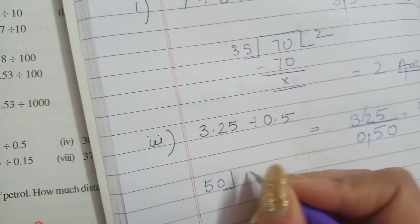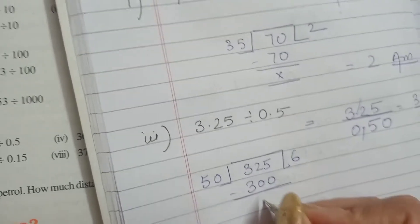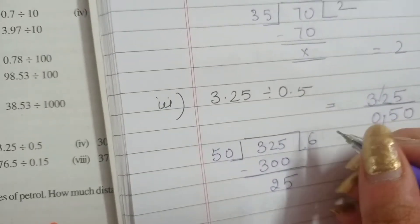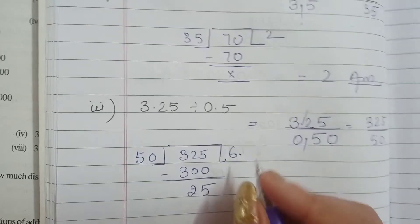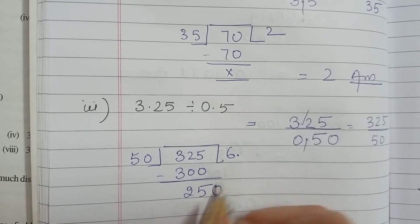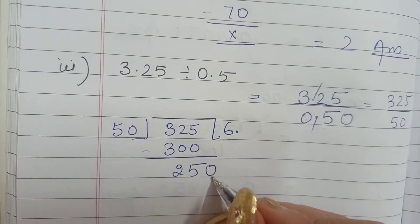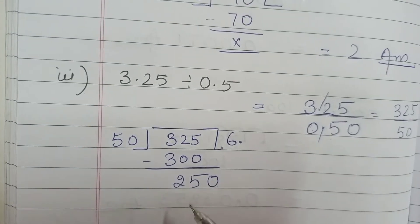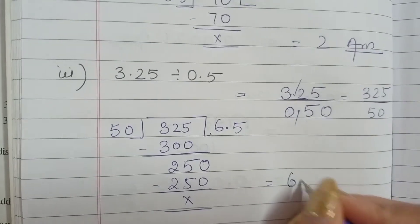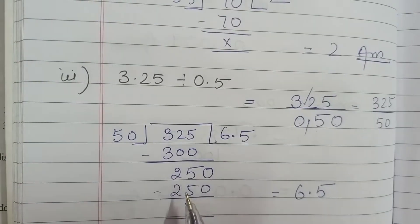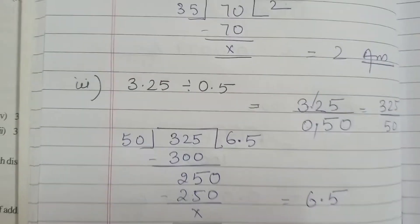Simply we will divide 325 by 50. 50 into 300 — the remainder is 25. We will not leave it like this. We add a decimal sign to the answer, and when we add the decimal sign we can write a 0 with the remainder, making it 250. We can easily divide: 50 into 250 is 5. Therefore our answer has come: it is 6.5. Whenever a remainder is left, we solve it by adding a decimal sign to the answer and writing a 0 with the remainder.